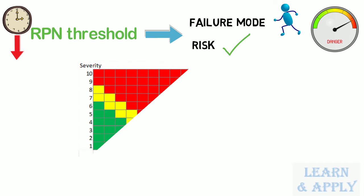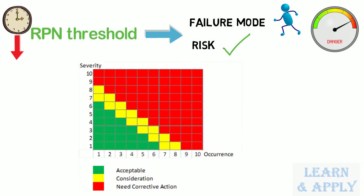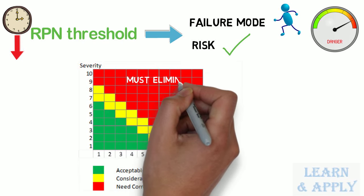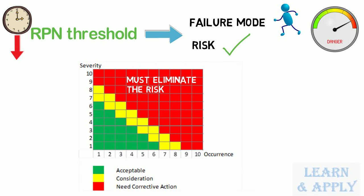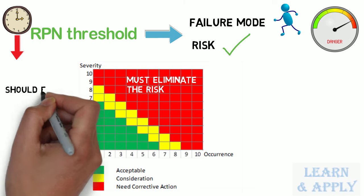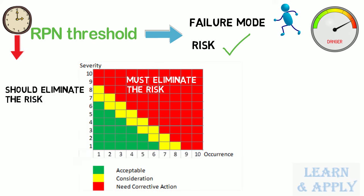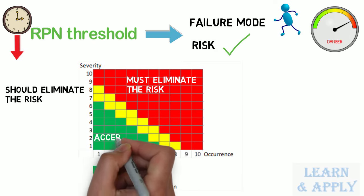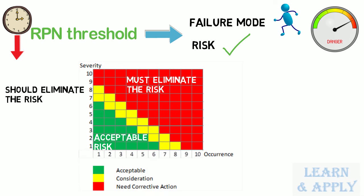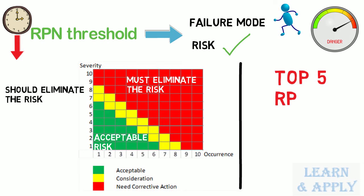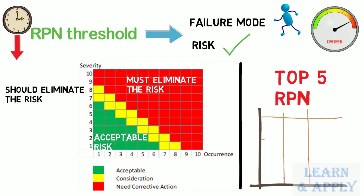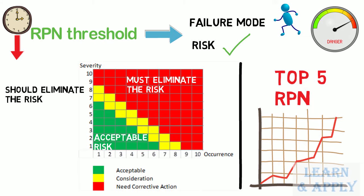A better approach is to use a risk matrix combining severity and occurrence. In this matrix, color indicators are: red — the team must eliminate or reduce the risk; yellow — the team should eliminate or reduce the risk; and green — acceptable risk. Other organizations may address corrective action for the top RPNs, then reset and identify new top RPNs for the next improvement cycle. This method promotes continuous improvement.